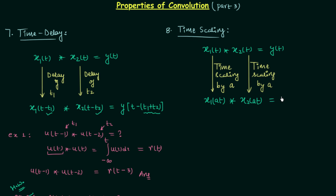After performing the time scaling and convoluting x1(at) with x2(at), according to the time scaling property the resultant signal will be (1/|a|) · y(at), where a cannot be equal to zero. This is the time scaling property of the convolution operation. Now we will solve one example to understand this in a much better way.